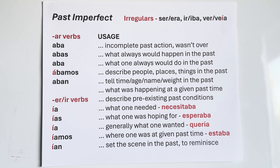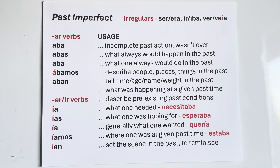Let's take a look at the endings for AR verbs: aba, abas, aba, ábamos, aban. You take the infinitive like hablar, take the AR off, and add your ending. Hablaba mucho — she used to talk a lot. Notice the ending for he and she, aba, is the same as I. The ending for tú, the familiar you, is A-B-A-S with an S. And ábamos is the longest of the five.